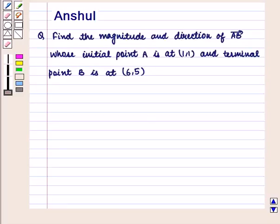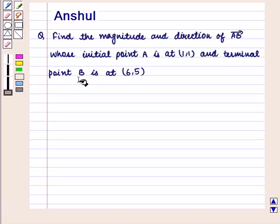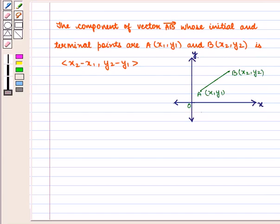Hello and welcome to the session. In this session, we are going to discuss the following question: Find the magnitude and direction of vector AB whose initial point A is at (1,1) and terminal point B is at (6,5).